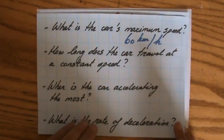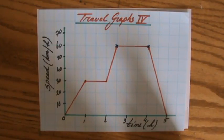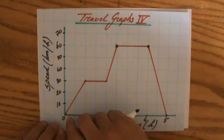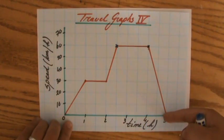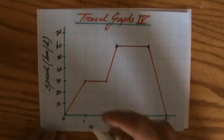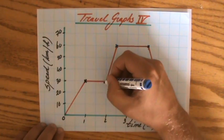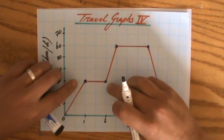How long does the car travel at a constant speed? Well, constant speed for distance-time graphs would be here and here. But for a speed-time graph, constant speed are the horizontal lines. The speed isn't changing, it is constant.